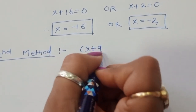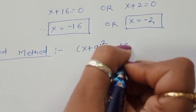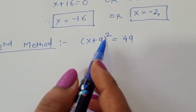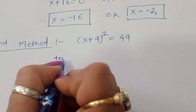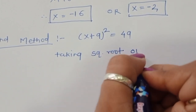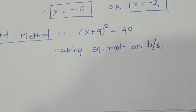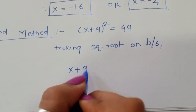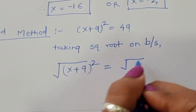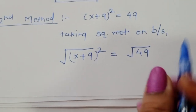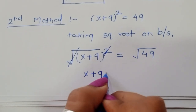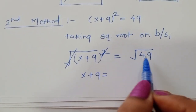Second method: x plus 9 whole square is equal to 49. Since this is a square term, we take the square root on both sides to remove the square. Taking square root on both sides, the square and square root cancel on the left, giving x + 9 equals the square root of 49.